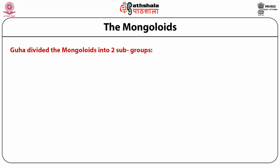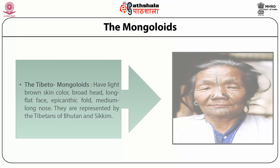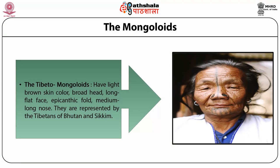Guha divided the Mongoloids into two subgroups: Paleo-Mongoloid and Tibeto-Mongoloid. The Paleo-Mongoloid long-headed type have dark light brown skin color, long head, short and fat face, prominent cheekbones and short stature, whereas the broad-headed ones have dark skin color, a little broader head, epicanthic fold and medium stature. They belong to Assam and the Indo-Myanmar border. Tibeto-Mongoloids have light brown skin color, broad head, long flat face, epicanthic fold, medium-long nose and they are represented by the Tibetans of Bhutan and Sikkim.